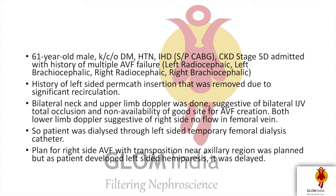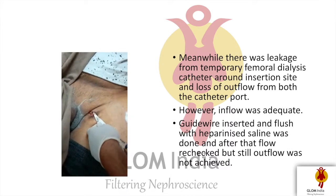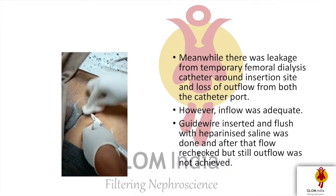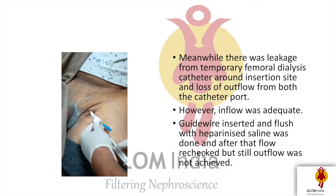Both lower limb Doppler was done, suggesting thrombosis of the right-sided femoral vein. Meanwhile, the patient was dialyzed through a left-sided temporary femoral dialysis catheter, and the plan was to create an AVF near the axillary region with transposition. However, as the patient meanwhile developed left-sided hemiparesis, that plan was deferred. There was also leakage from the temporary femoral dialysis catheter around the insertion site and loss of outflow from both catheter ports.